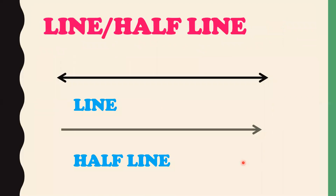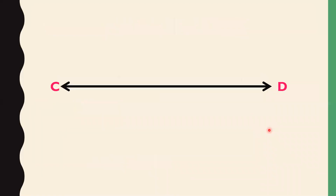Next we have the line and the half line. About a line I already told you. A half line means a straight line that is indefinite and goes in one direction only — it goes on indefinitely in one direction. In a half line, we put an arrow in one direction only.